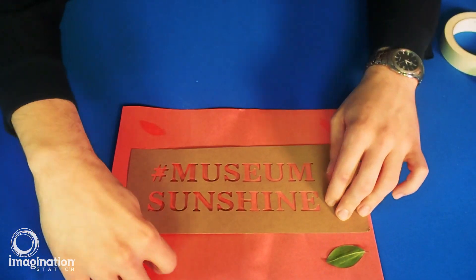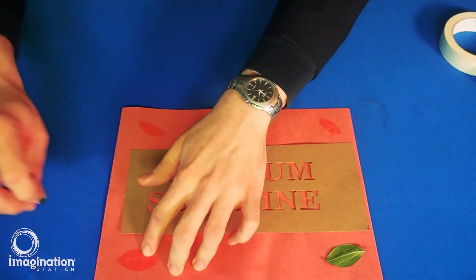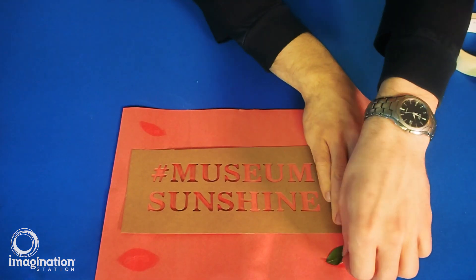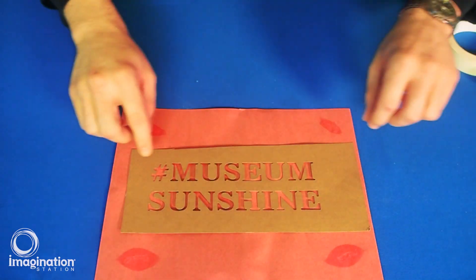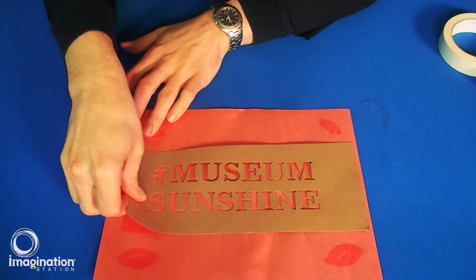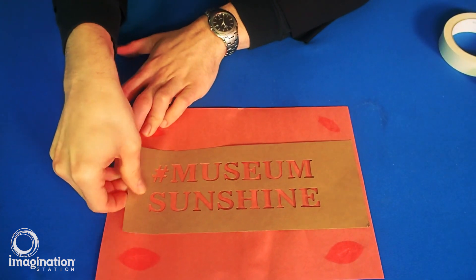The areas of the construction paper that were covered retained their original color because the items on top absorbed and reflected the UV light. The areas of the paper that were exposed to the UV light now appear faded in color.